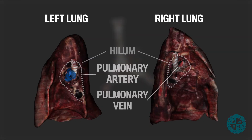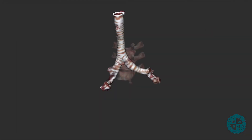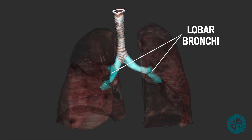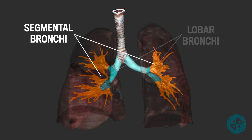At the lung hilum, we will also see the pulmonary arteries and veins. If we continue to follow the main bronchi down into the lung tissue, we will see them branch into the lobar bronchi. The lobar bronchi then direct the air into individual lobes of the lungs. When the lobar bronchi branch, we will see the segmental bronchi. Each segmental bronchus enters its own bronchopulmonary segment. The right lung has about 10 of these segments, and the left lung usually has about 9.